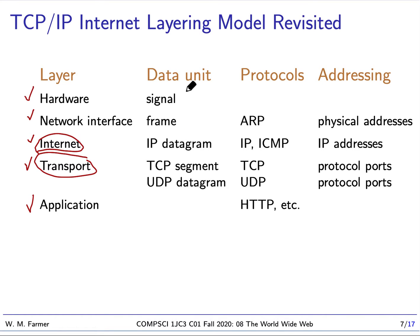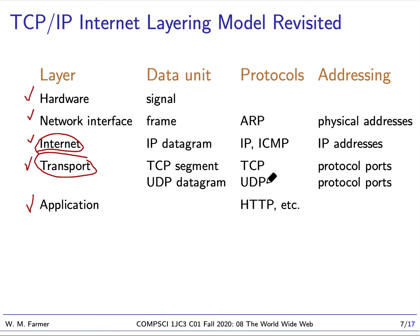At each layer we have different data units. At the hardware layer we have some kind of signal — microwave or electronic. At the network interface, the data unit is a frame. At the internet level it's an IP datagram. At the transport level it's either a TCP segment or a UDP datagram. Key protocols include: ARP at the network layer, which matches physical addresses to IP addresses; IP and ICMP at the internet level; TCP and UDP at transport; and application protocols like HTTP for web services.